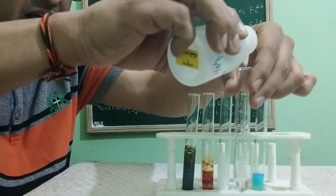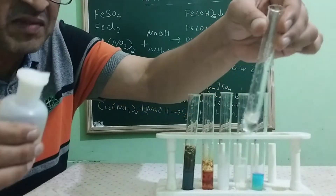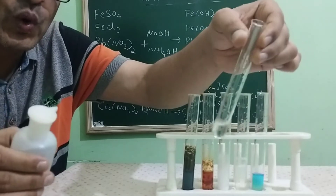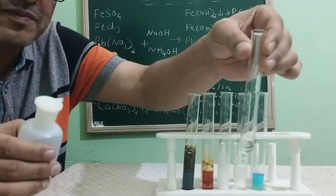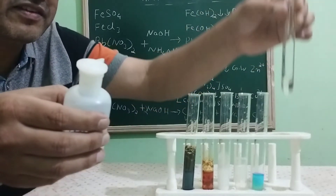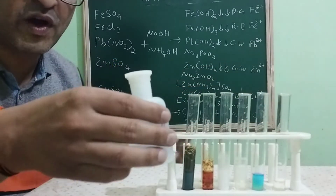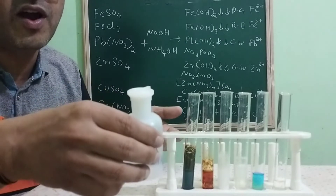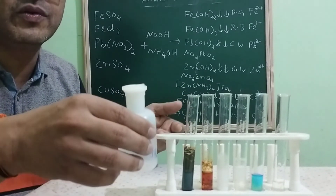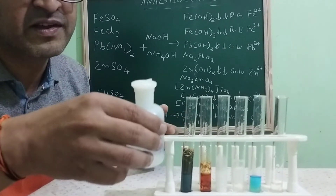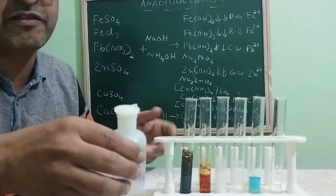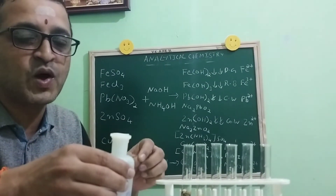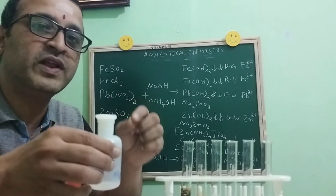Next is calcium nitrate — when I add ammonium hydroxide, there is no formation of precipitate. Why? The reason is the concentration of OH minus ions is very less, so it is not sufficient to produce a precipitate of Ca(OH)2. It will produce precipitate only with sodium hydroxide.